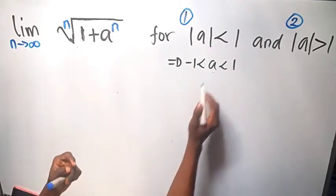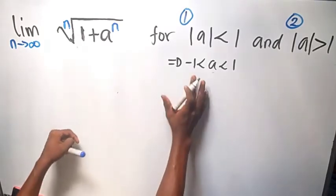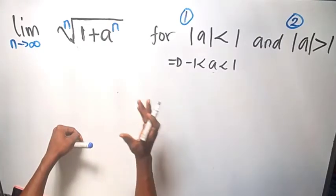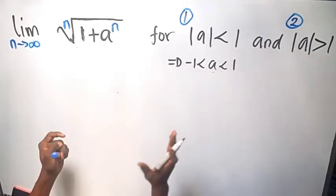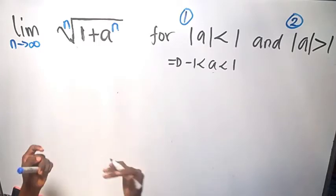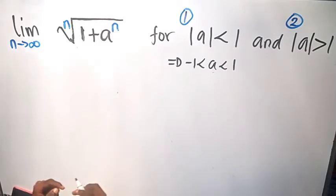That is all the proper fractions, both negative and positive — from 0, negative 0.9, negative 0.5, all those values like 0.9, 0.5, and so on.